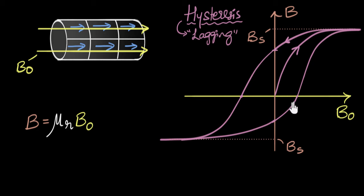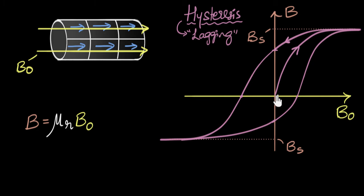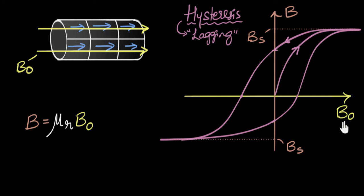This graph is called a hysteresis graph, and every ferromagnet will have its own. You can see why the magnetic field inside is lagging behind the vacuum field: when we reduce the vacuum field to zero, the magnetic field inside did not go to zero because of retention. It's only when I make it negative that the field inside becomes zero, and when I make the vacuum field even more negative, then the field inside becomes negative. So the field inside is lagging behind the vacuum field.